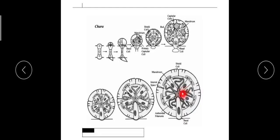At the tip of each manubrium, it bears some rounded cells called primary capitula. These primary capitula in turn possess secondary capitula. Each of these secondary capitula bears a pair of branched or unbranched antheridial filaments extending from the center into the cavity. The globule is thus a spherical orange-red structure attached to the node through a pedicel, composed of eight large curved shield cells.